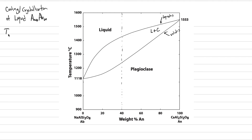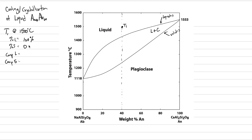At each temperature we're going to determine: percent liquid, percent solid, composition of the solid, and composition of the liquid. Starting above the liquidus, it is 100% liquid and 0% solid. The composition of the liquid is the same as our starting material — AN40, albite 60 — and the composition of the solid is not applicable because none exists.